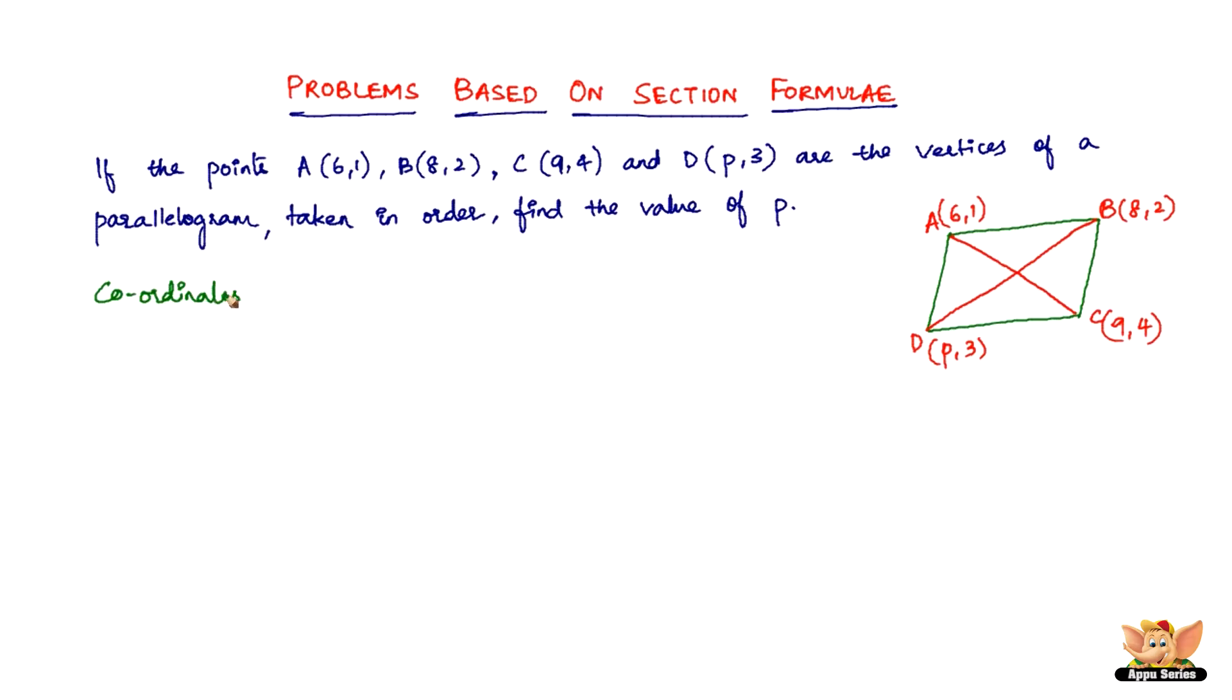Coordinates of midpoint of AC is going to be equal to the coordinates of the midpoint of BD. So how do you find the midpoints of AC? It's simple. This is x1, y1, and this is x2, y2. It will be x1 plus x2 divided by 2. So that'll be 6 plus 9 divided by 2, comma, 1 plus 4 divided by 2 equal to p plus 8 divided by 2, comma, 3 plus 2 divided by 2.